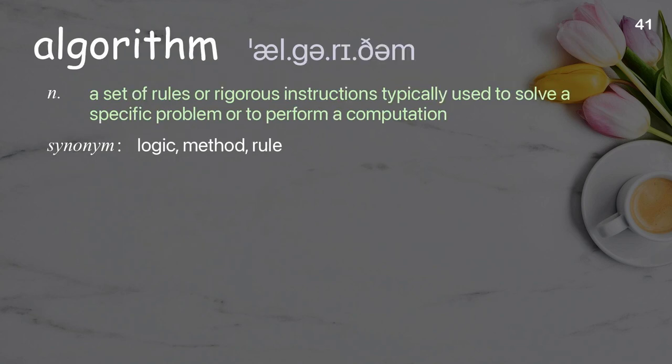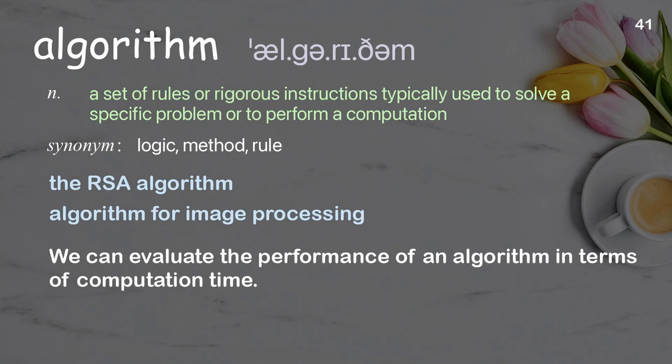Algorithm: a set of rules or rigorous instructions typically used to solve a specific problem or to perform a computation. Examples: the RSA algorithm, algorithm for image processing. We can evaluate the performance of an algorithm in terms of computation time.